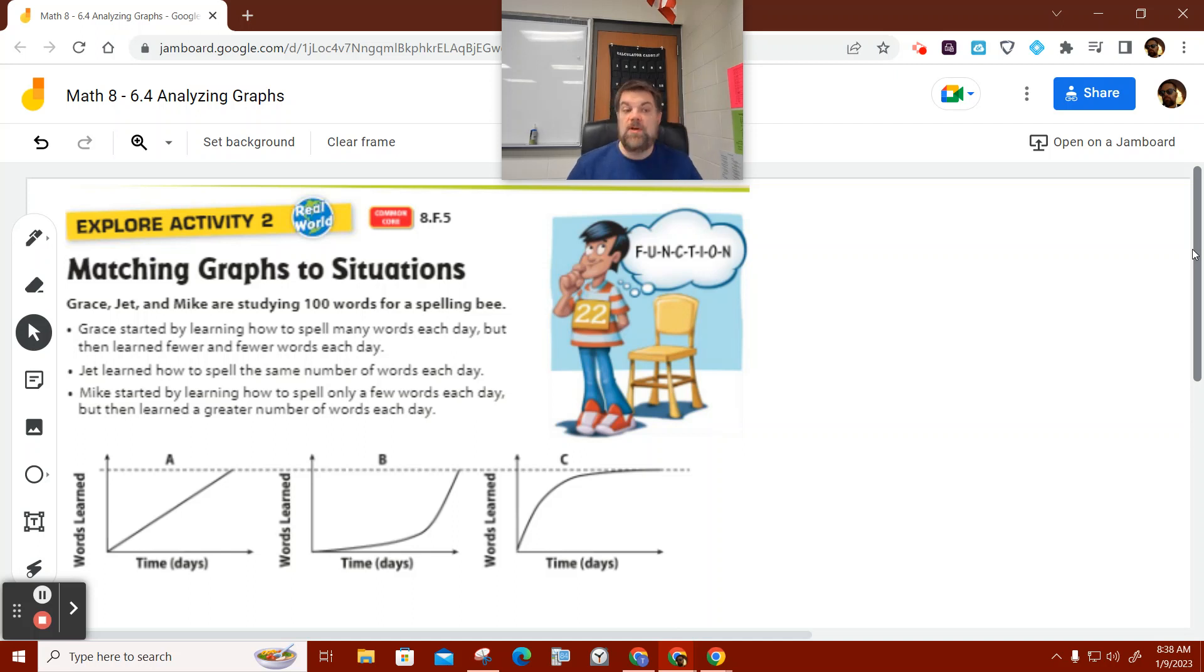All right, so now in this next example, we have matching graphs to a situation. It says Grace, Jet, and Mike are studying 100 words for a spelling bee.